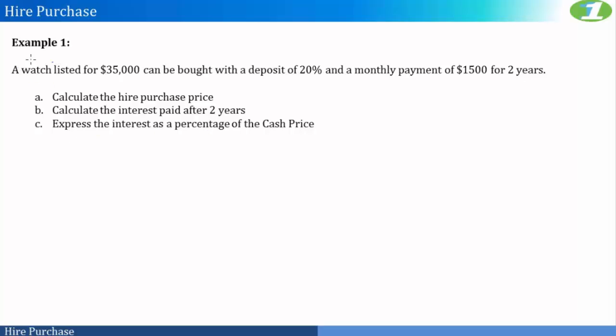The first example we look at: a watch listed for $35,000 can be bought with a deposit of 20% and a monthly installment of $1,500 for two years. So to buy this watch, which costs $35,000, we can actually buy this thing on hire purchase, which requires us to pay a deposit of 20%. So let's calculate our deposit. This is actually 20% of your listed price, and this gives us $7,000.